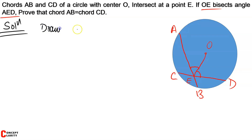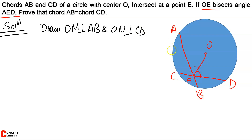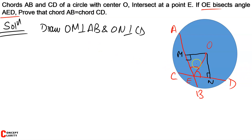So what I will do is draw OM perpendicular to AB and ON perpendicular to CD. I have made a perpendicular to AB — this is my construction, it is 90 degrees because I have already mentioned it will be a perpendicular. So let's mark these as OM and ON. Now I have got two triangles — two closed figures: triangle OEM and triangle OEN.